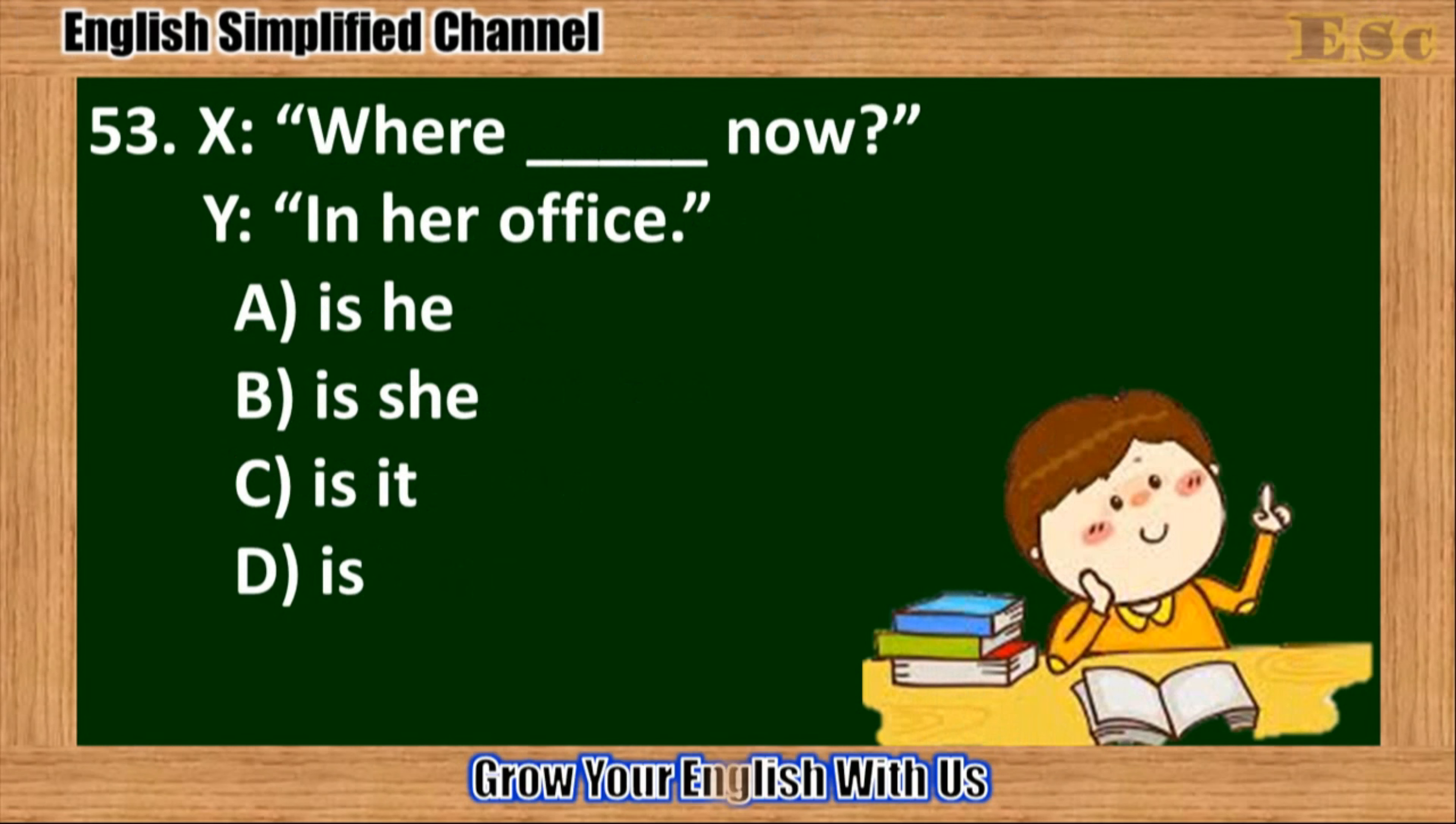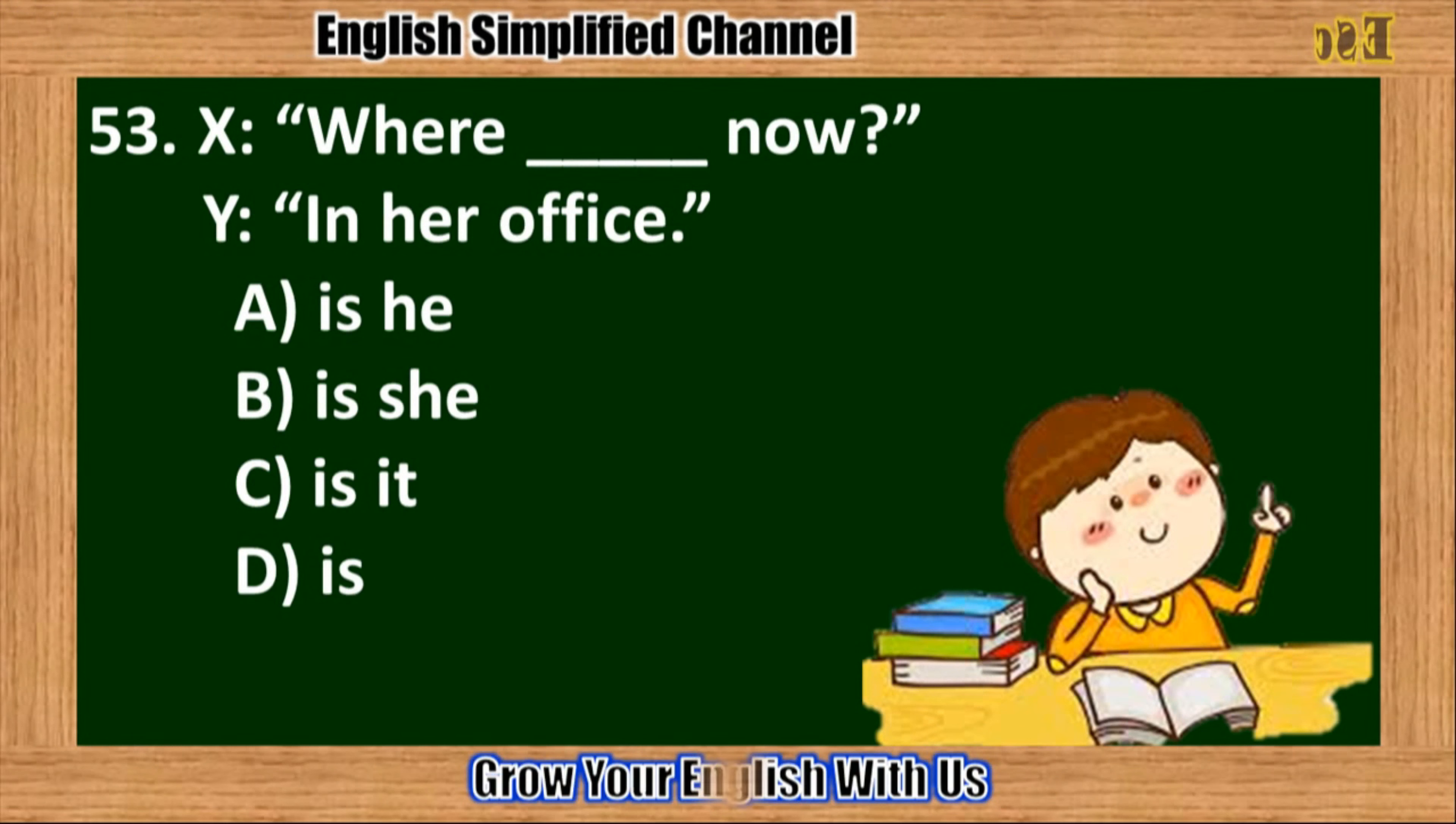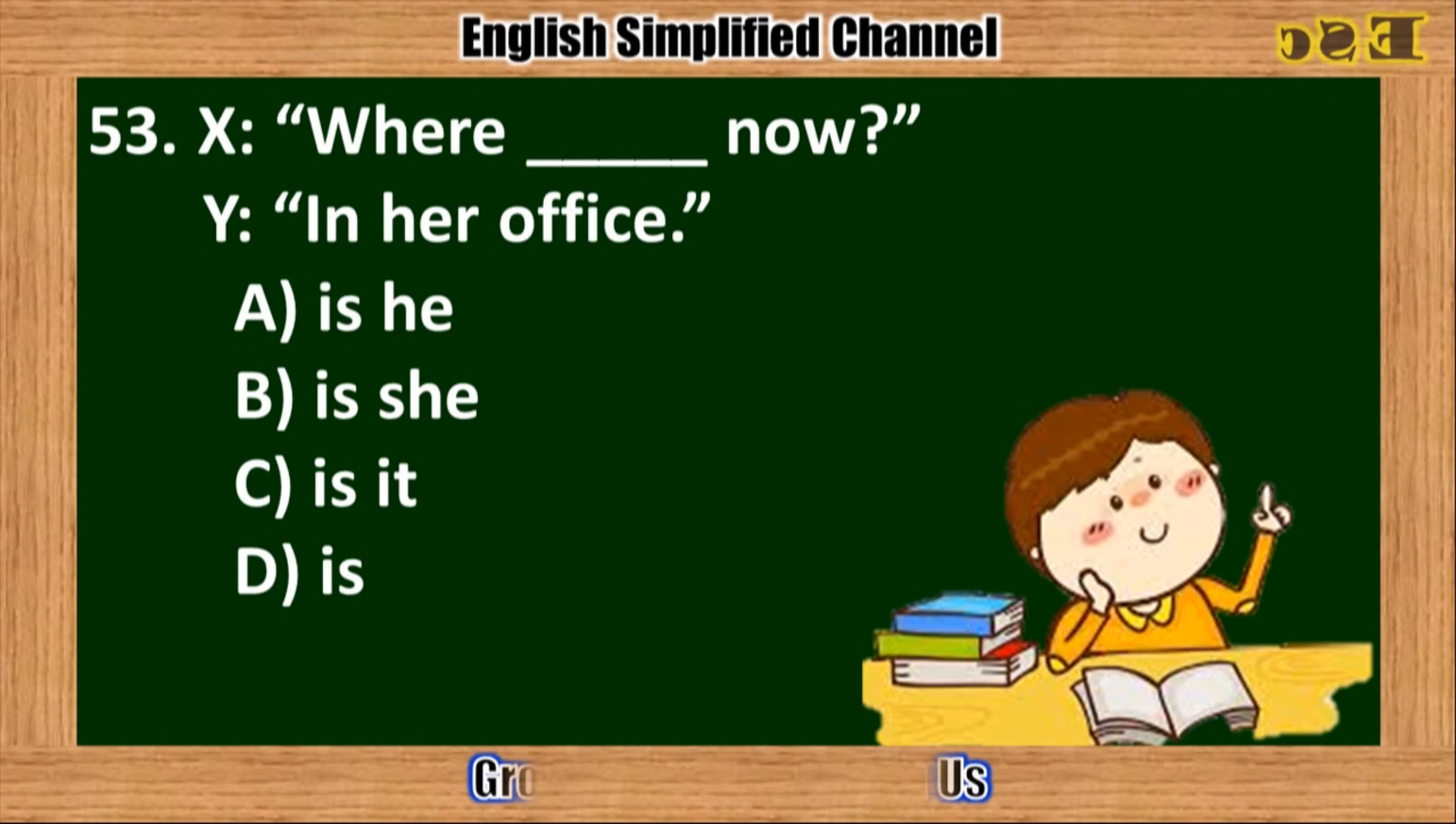53. Blank now? In her office. A. Is she. B. Is she. C. Is it. D. Is.